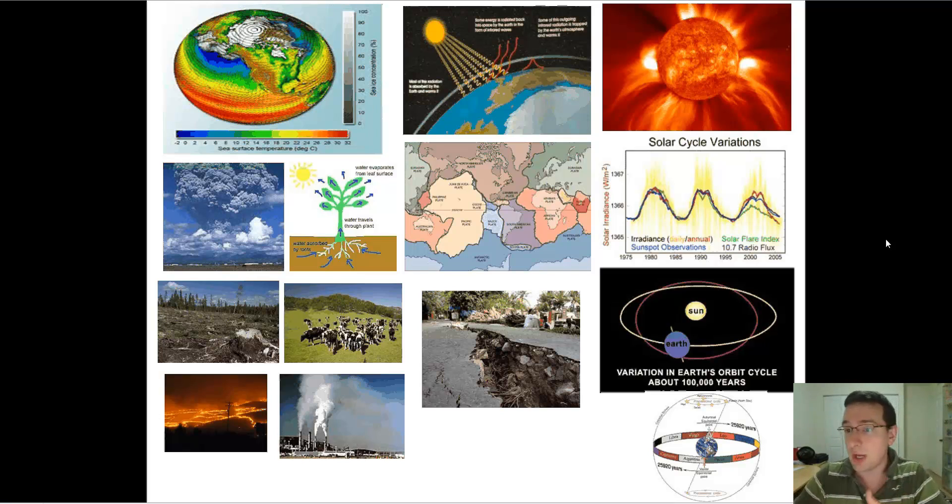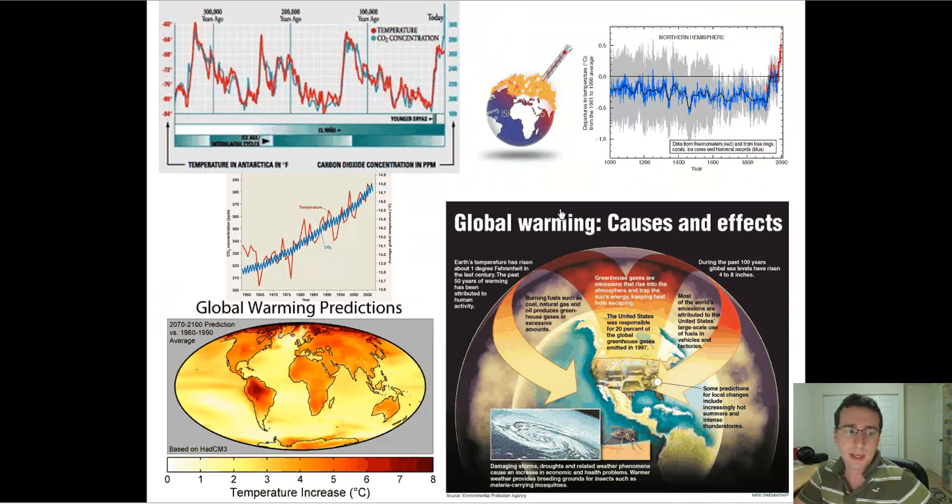Greenhouse effect, it might change. If the greenhouse effect changes, the global climate changes. The amount of life in the ecosystem makes the climate change. Humidity makes the climate change. When you put all of that together, you can't say that the current patterns of climate change are being caused by humans.